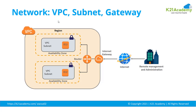These dotted lines represent a Virtual Private Cloud or VPC. VPC spans across a region, so within a region you can have multiple availability zones, all covered by this VPC.